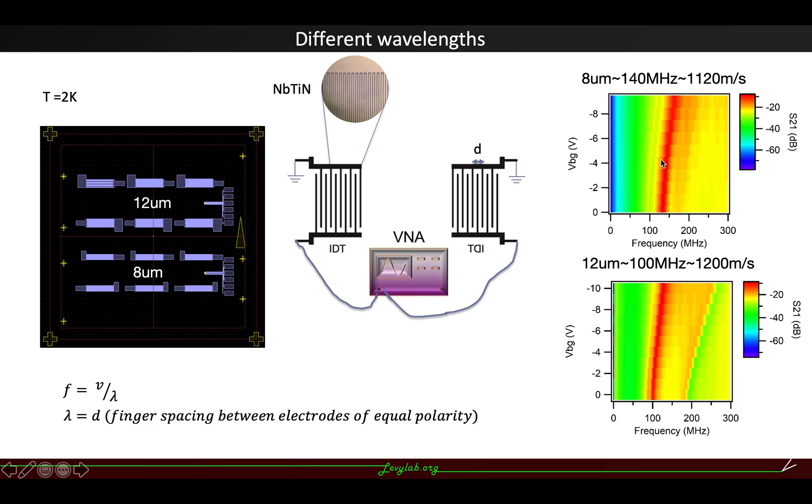we can see a very clear peak happens at the center frequency in the transmission parameter, scattering parameter, and it will give us a velocity at 2 Kelvin around 1200 meters per second.